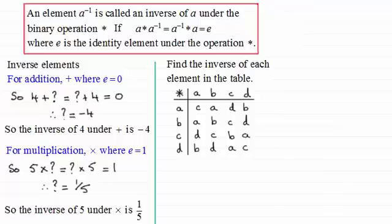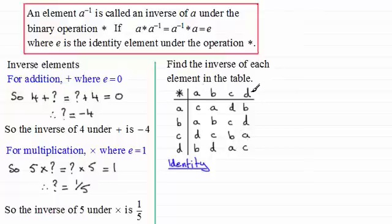Welcome back. First of all we've got to find what the identity element is. As I showed in the previous video, to find the identity element you look in the table and see where any row duplicates the row at the top and where any column duplicates the column on the outside. You'll notice it occurs under element B — A, B, C, D is repeated down there and A, B, C, D is repeated across the top. So the identity element is equal to B.